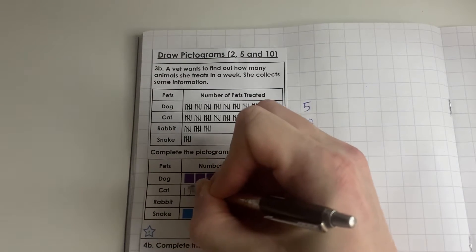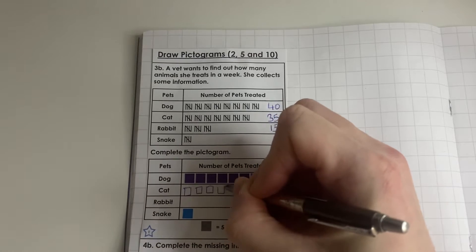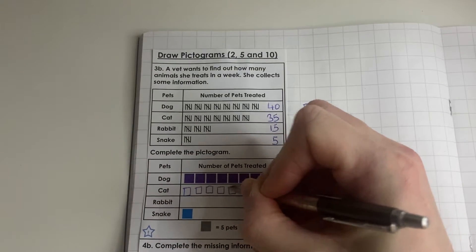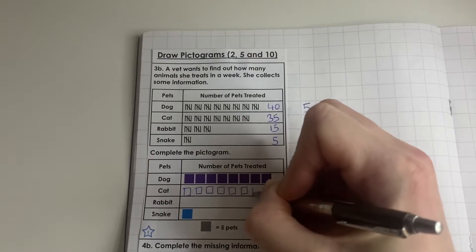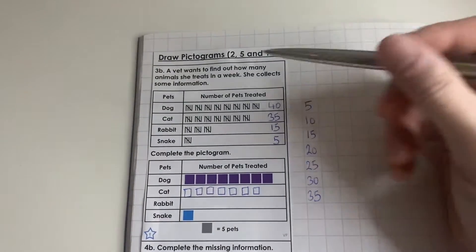I'll draw them in the cat row: 1, 2, 3, 4, 5, 6, 7. So that's the cat done.